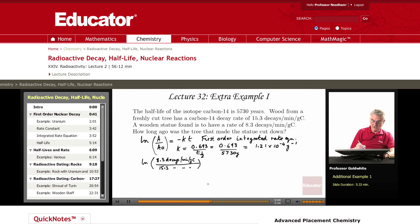So that ratio equals negative 1.21 times 10 to the negative 4 per year times T, where T is the time that has elapsed since the wood was cut down.